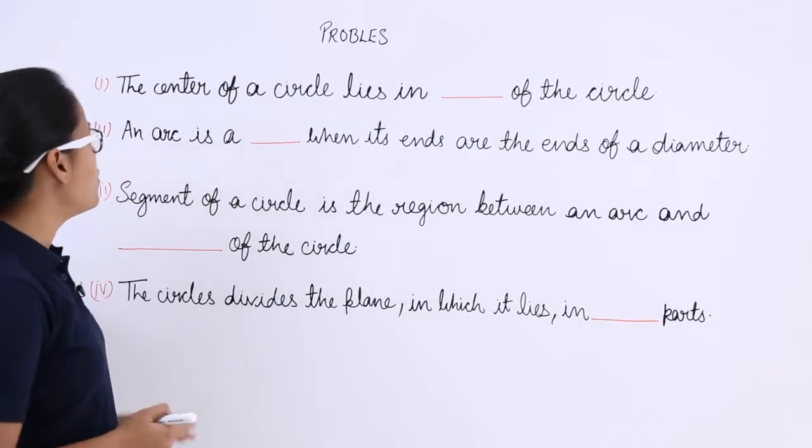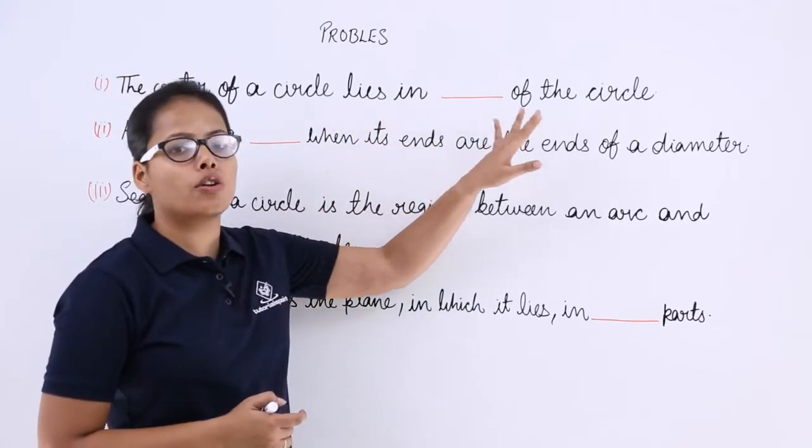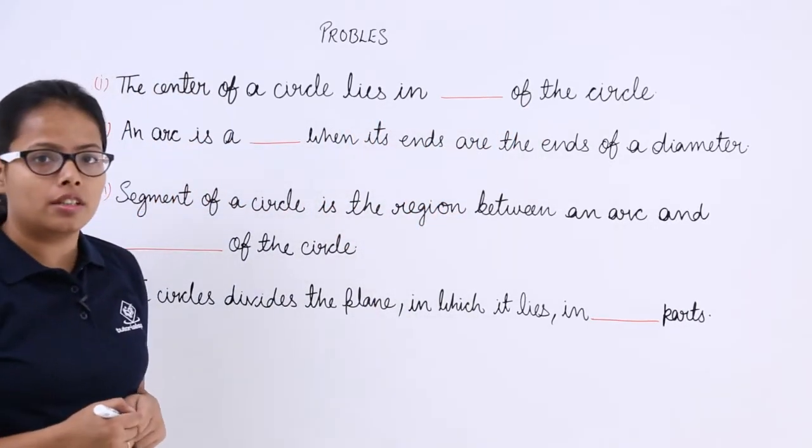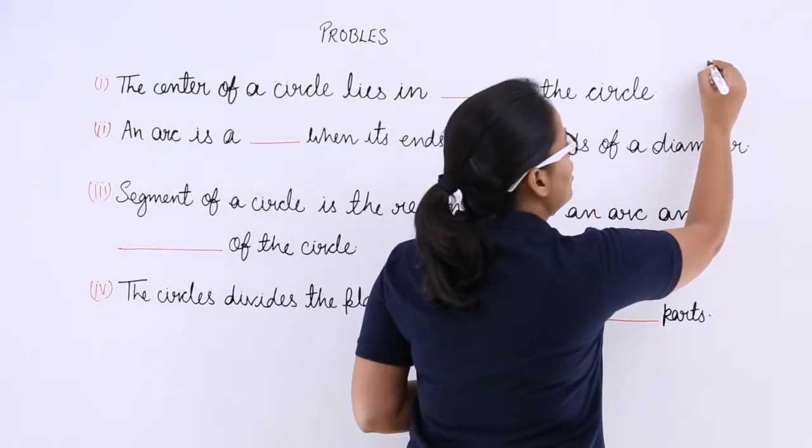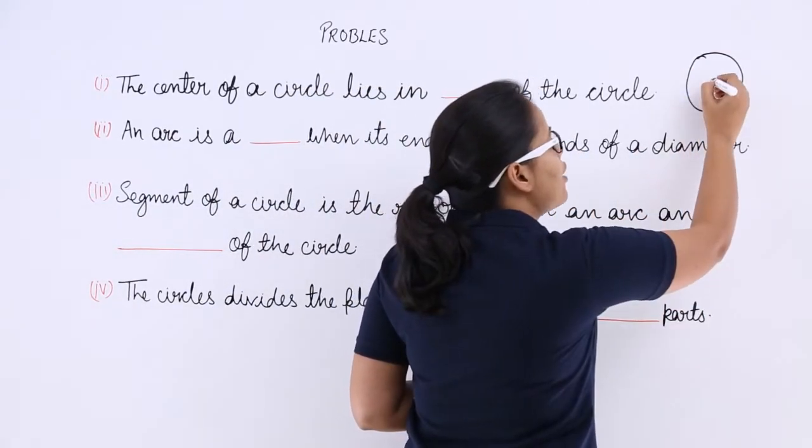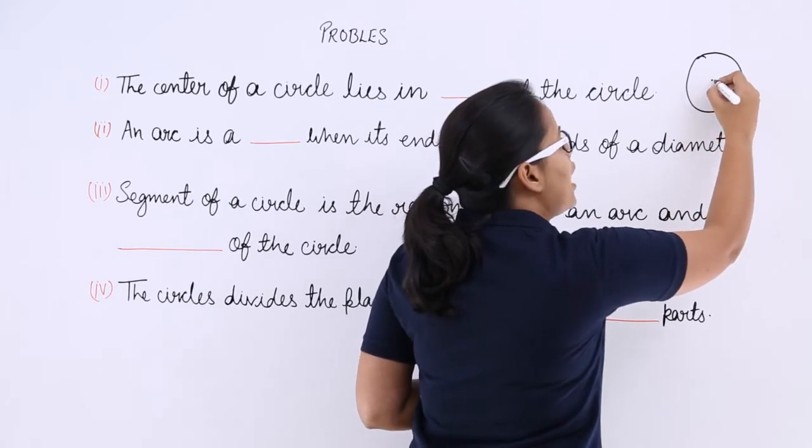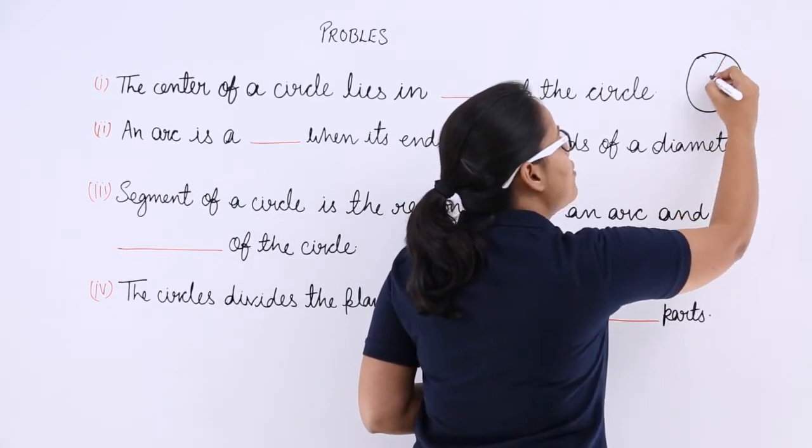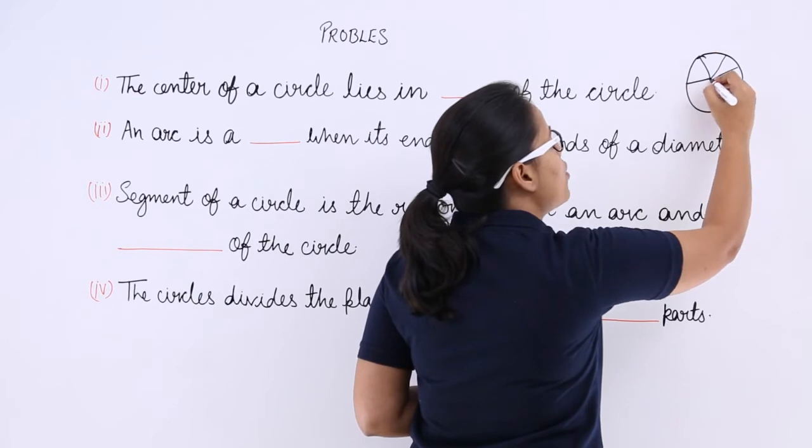Our first problem says the center of a circle lies in blank of the circle. You know that a circle looks like this and the center is the fixed point from where every point on the circle has a fixed distance which is known as the radius.